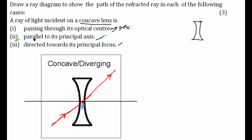Case two: a light ray going parallel to its principal axis. After refraction, what will happen? In a concave lens, a light ray passing parallel to the principal axis will refract in such a way that when you retrace the path of the refracted ray in the backward direction, it should meet the principal axis at the focus. So extending the refracted ray backwards, it meets the principal axis at the focus.